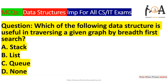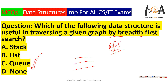The next question is: which data structure is useful in traversing a given graph by breadth-first search? To traverse in a BFS manner, a queue is used. The queue data structure processes level by level using the FIFO (first in, first out) mechanism. It is best suited for traversing a graph in a breadth-first way, so option C is the correct answer.